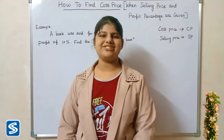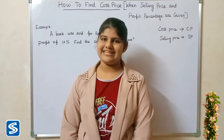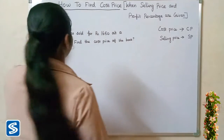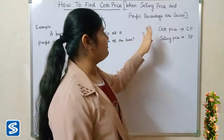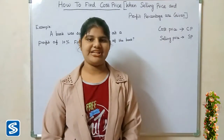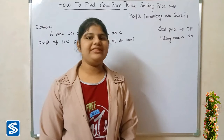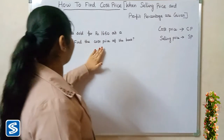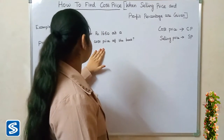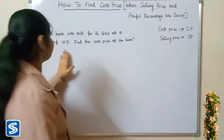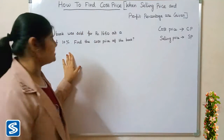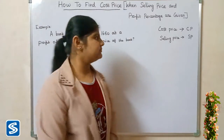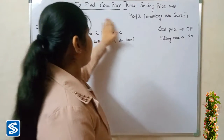Hi friends, welcome to Sawmish channel. In this video I'm going to teach how to find cost price when selling price and profit percentage are given. For example, a book was sold for rupees 1650 at a profit of 10 percent. Find the cost price of the book.